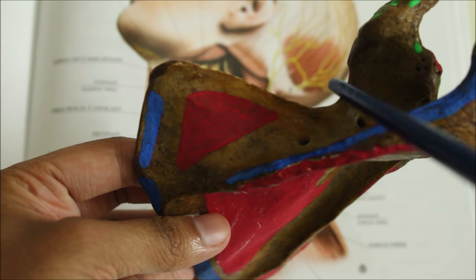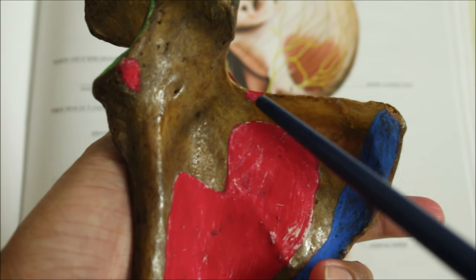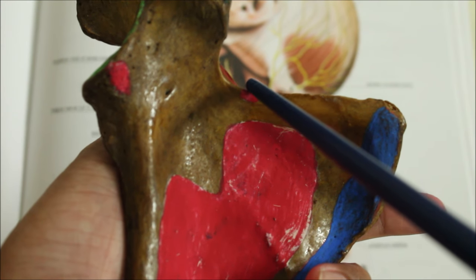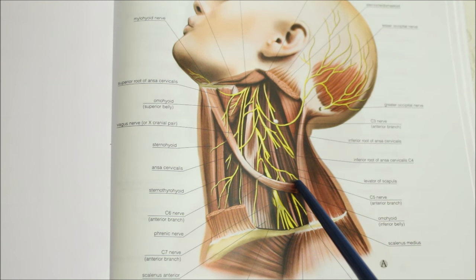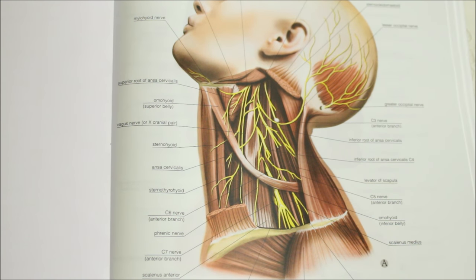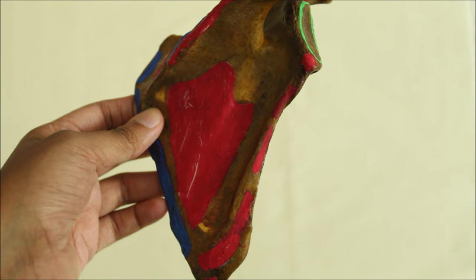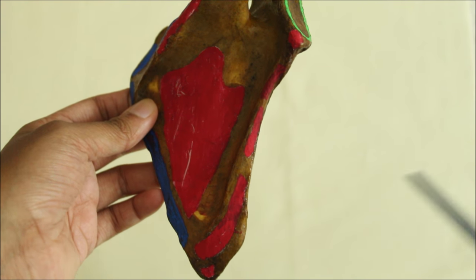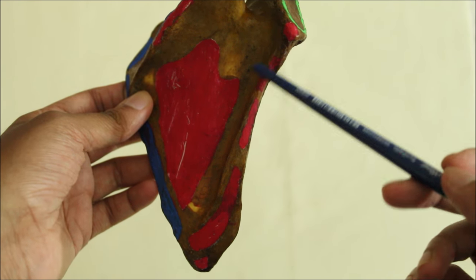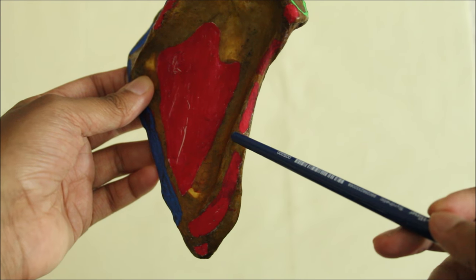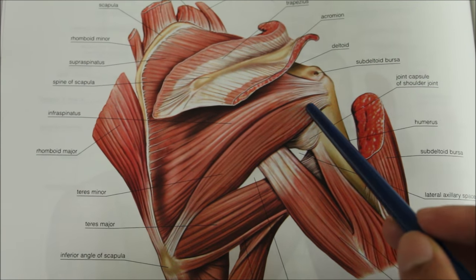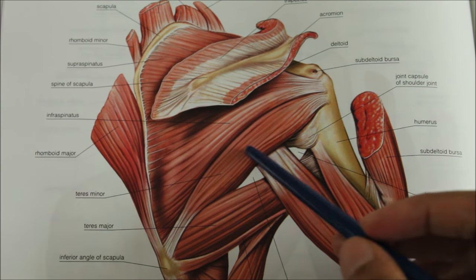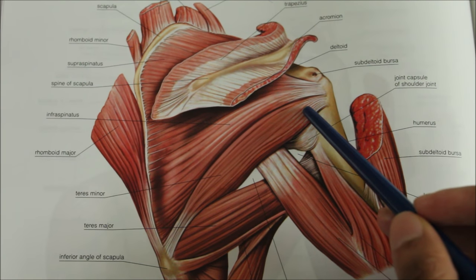The superior border has a suprascapular notch. The inferior belly of the omohyoid originates near this notch — near the suprascapular notch of the upper border of the scapula. The teres minor originates by two slips from the upper two-thirds of the lateral border on its dorsal aspect.